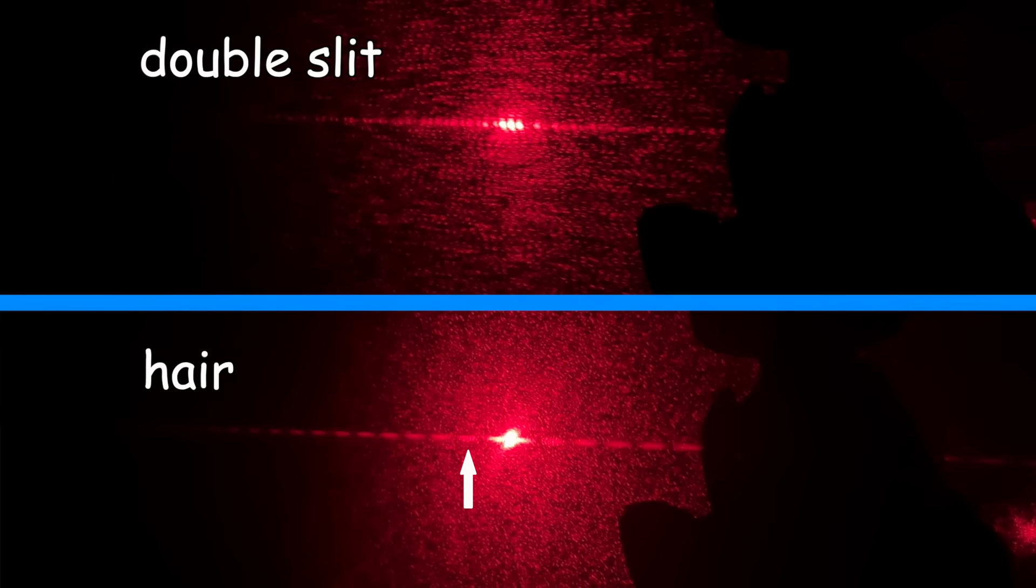For example, the dashes of light for the hair version are all evenly spaced and get lighter as we go, but the dots of the double slit are much more patchy. That's because of something called single-slit interference, which is basically a distraction in this scenario. So yeah, I kind of prefer the hair version.